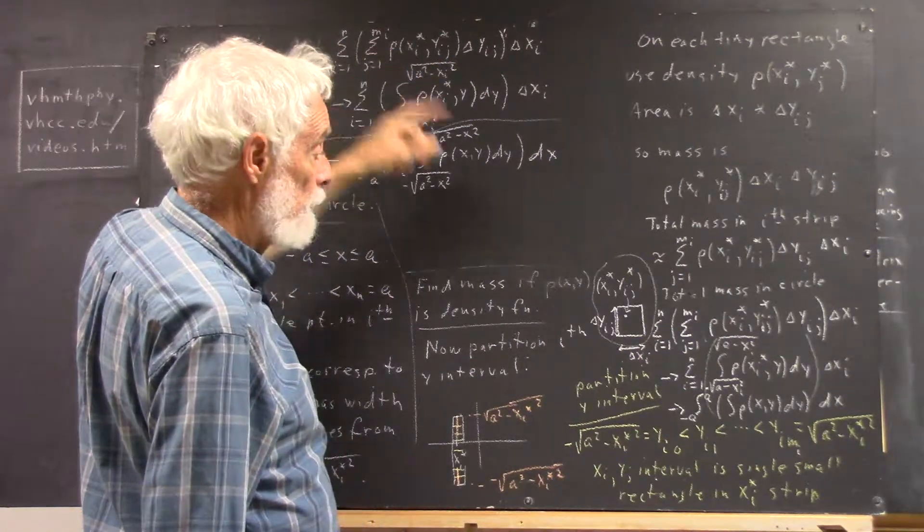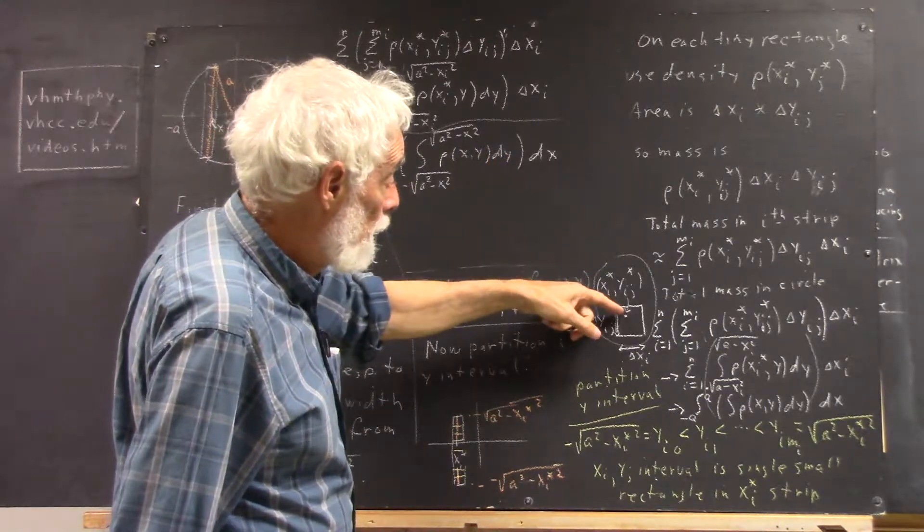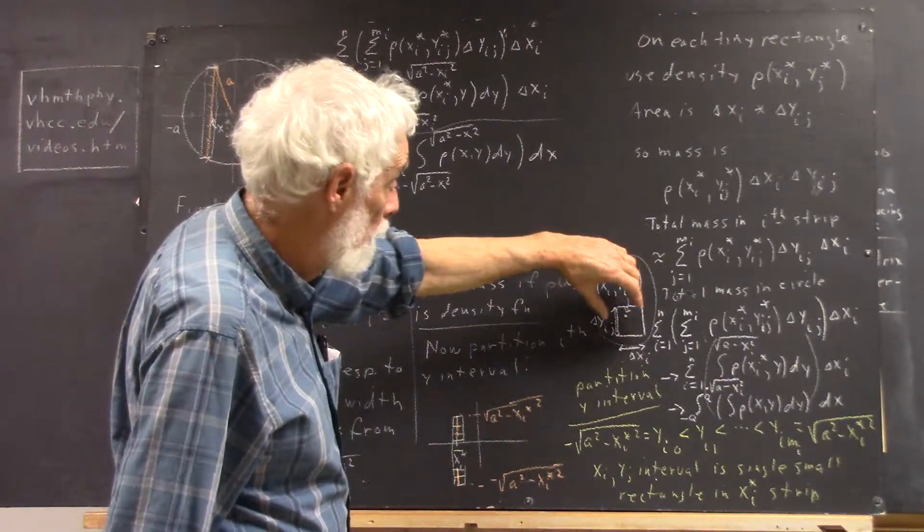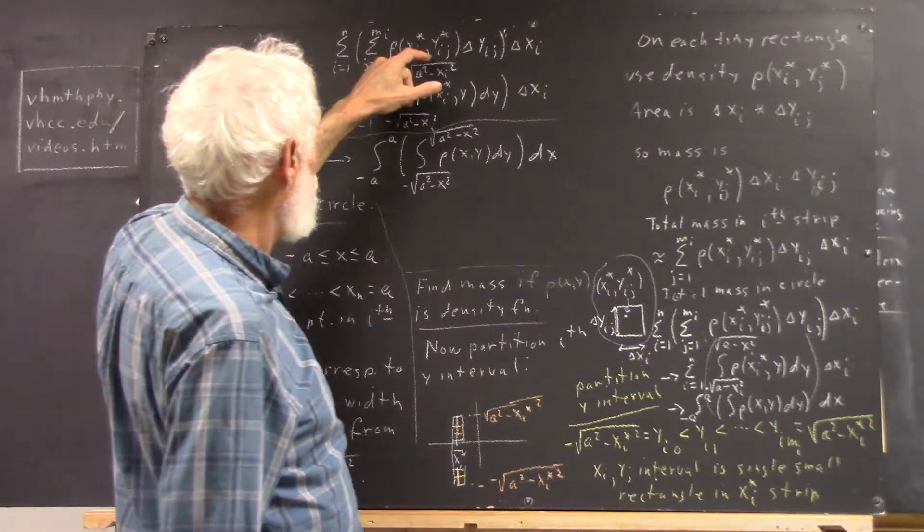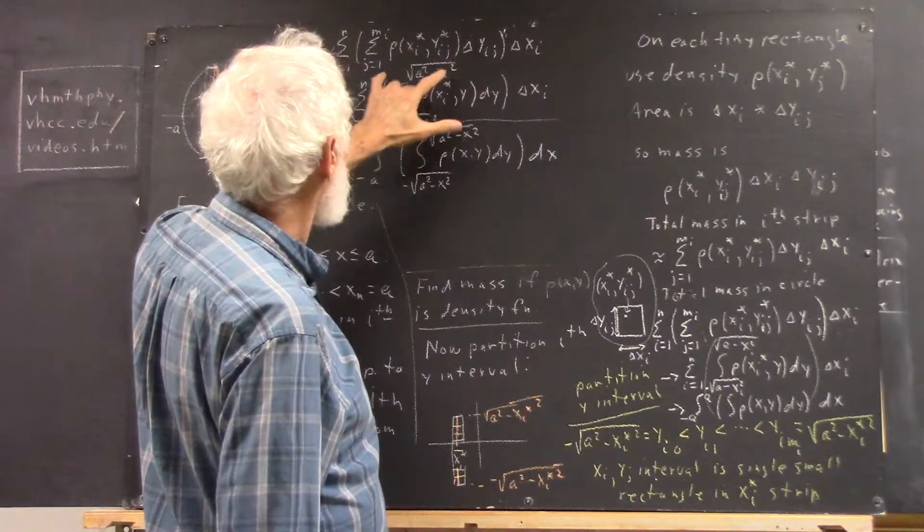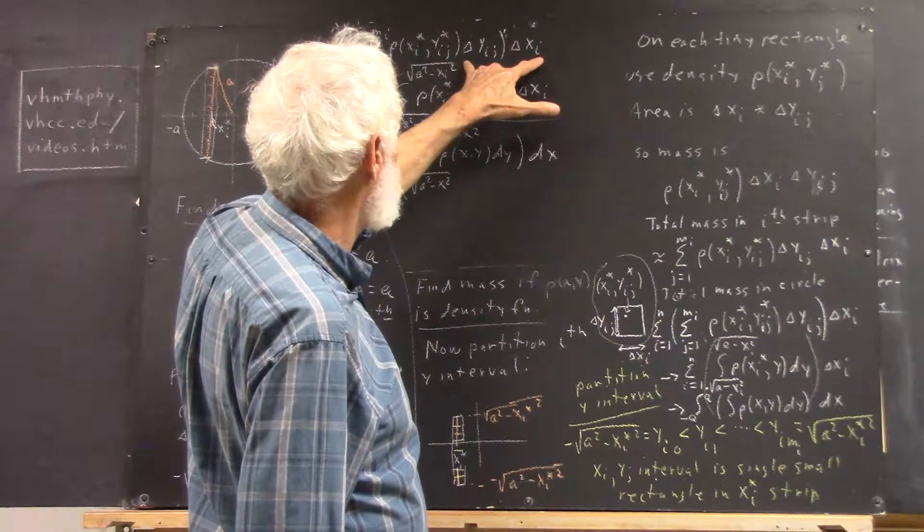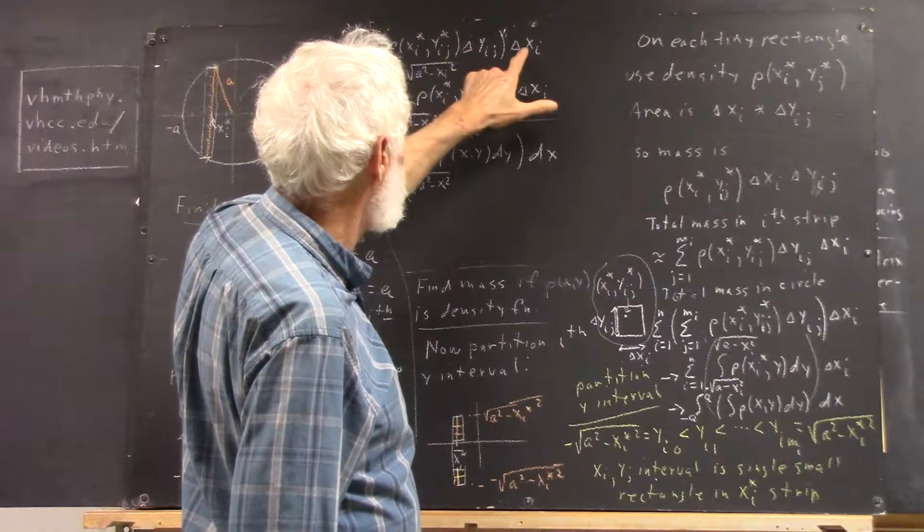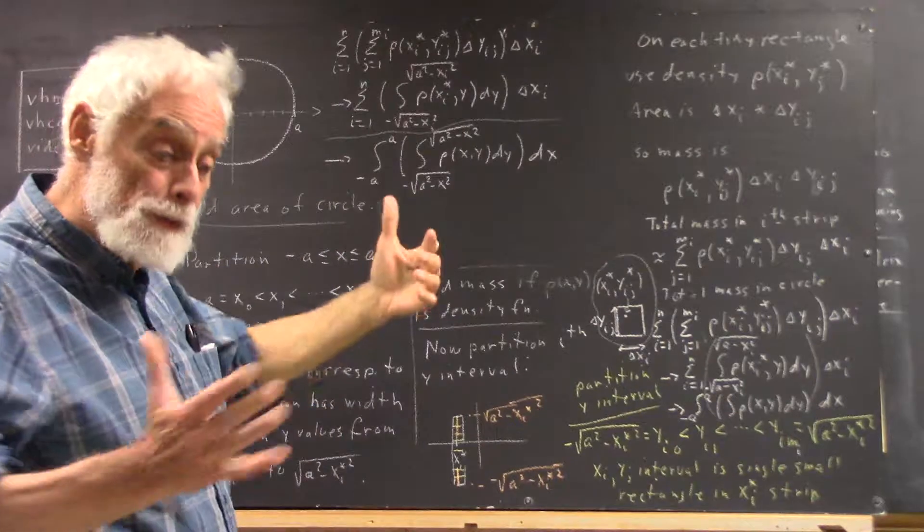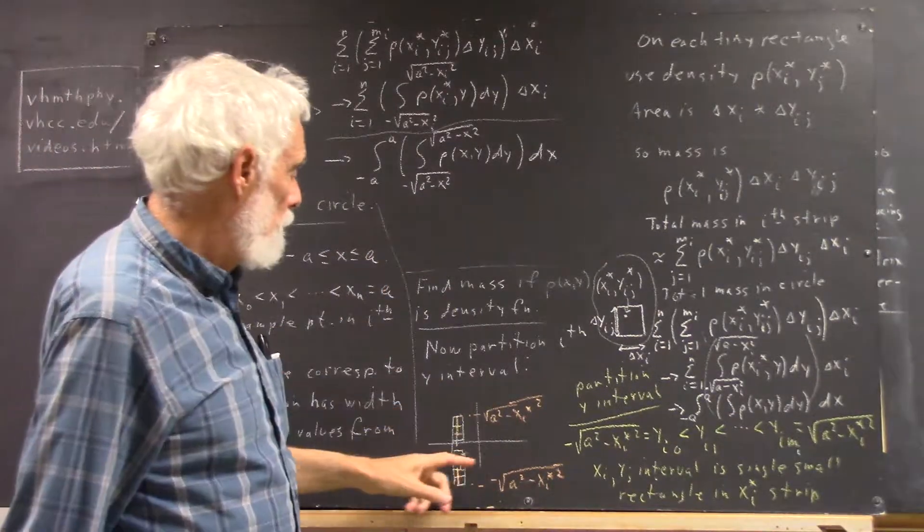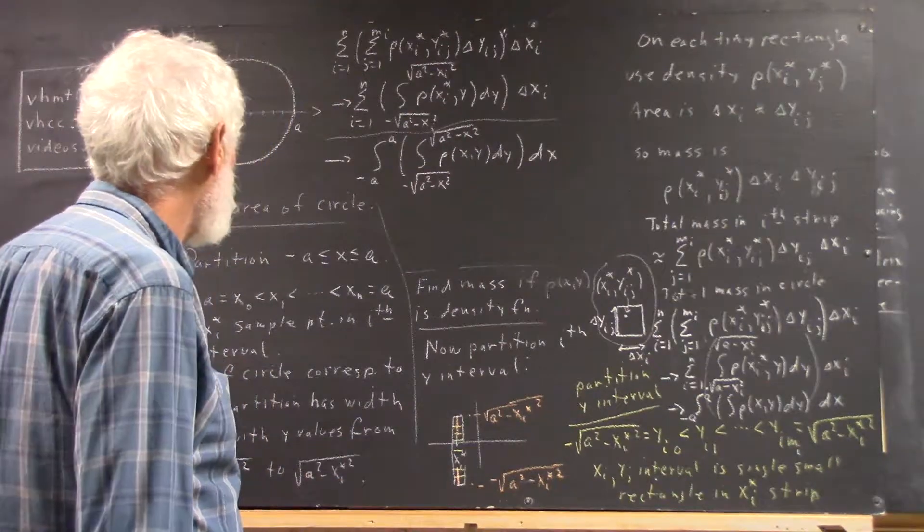And the density is going to be approximated as a constant, whatever the value is here. We're going to assume that applies over the entire rectangle. So it's going to be rho of xi star, yij star. So this rho density multiplied by the delta yij times the delta xi gives us the mass of the partition, of the small rectangle in the partition.